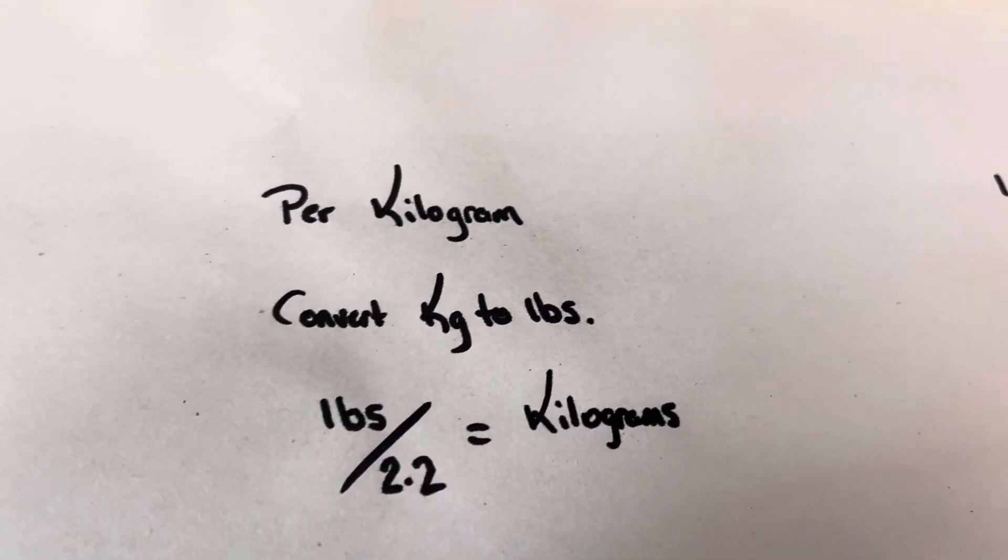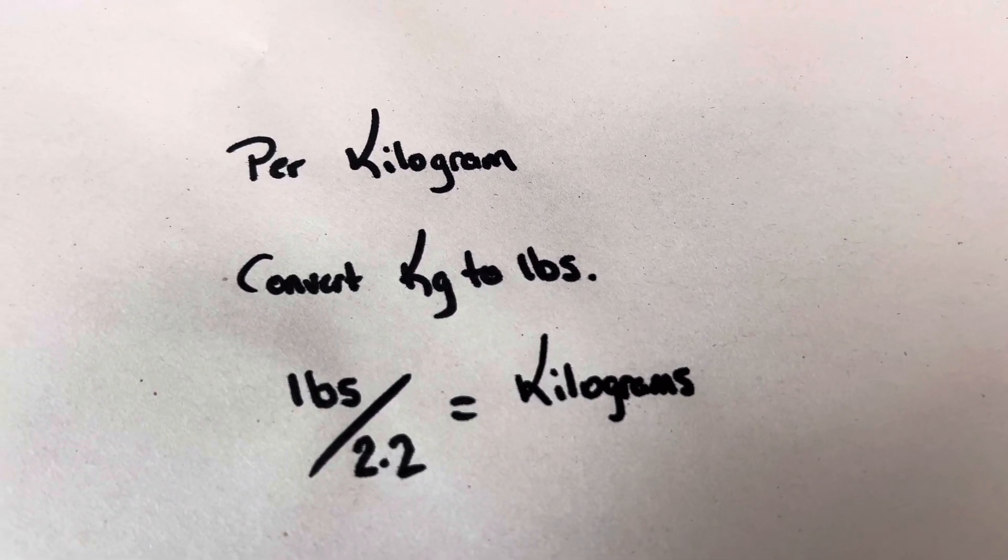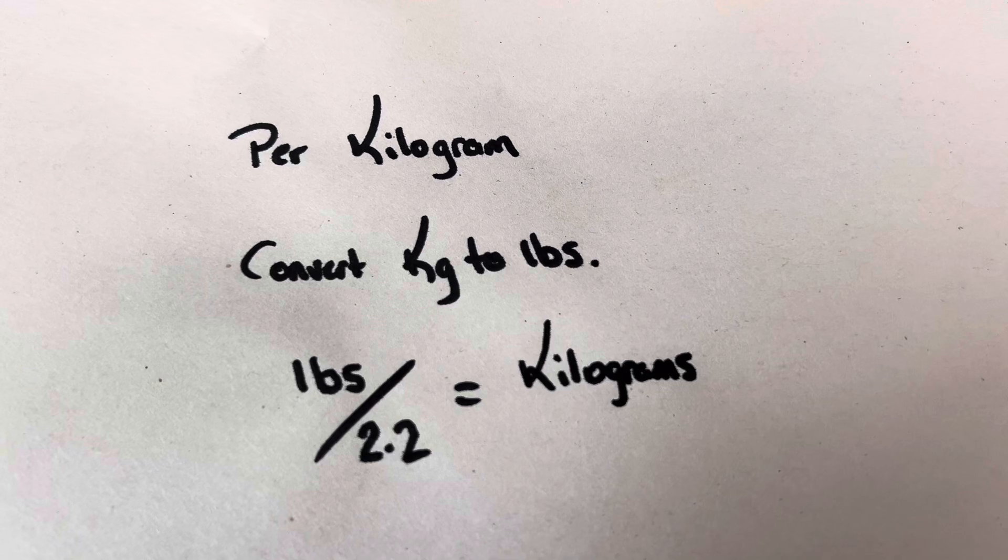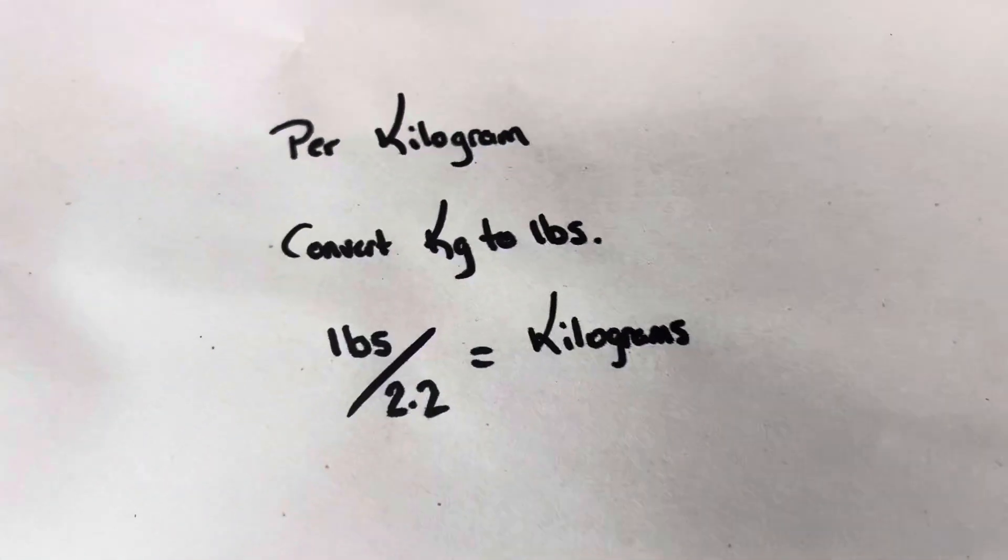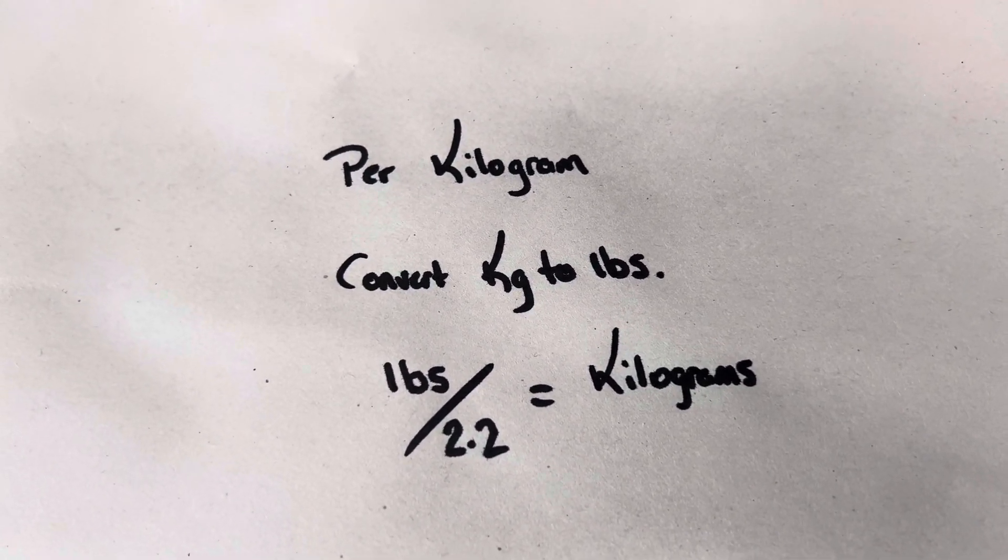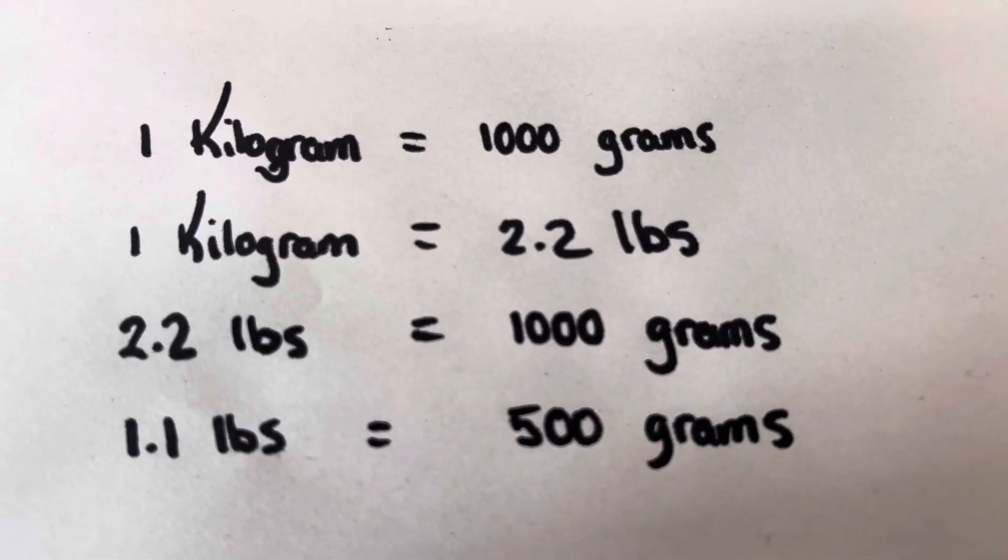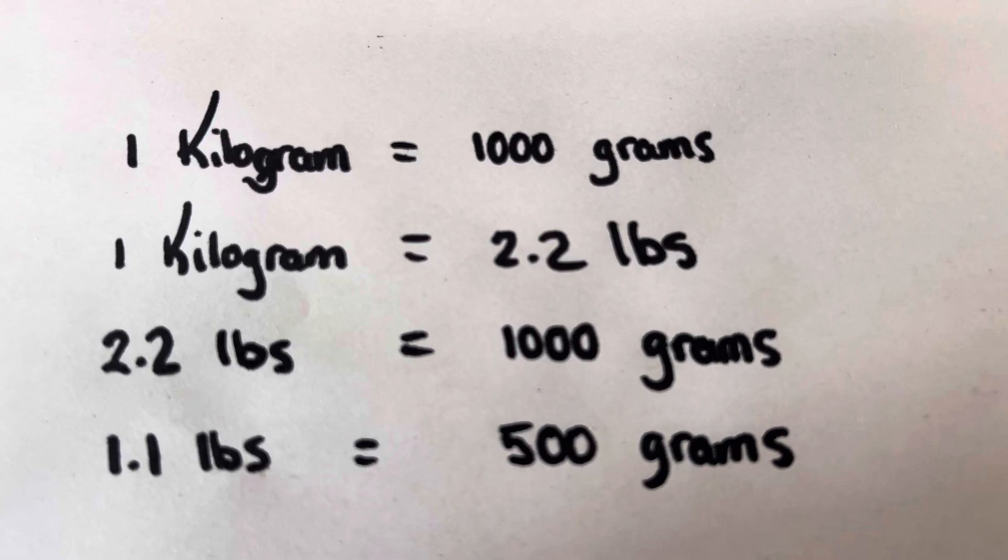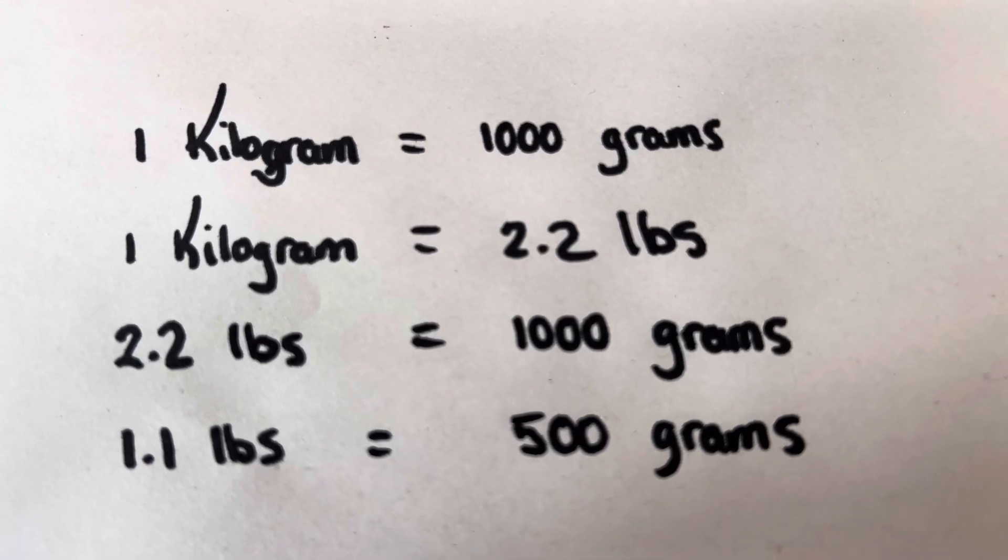A couple of the problems right off the bat for reptile doses are in kilograms. One pound divided by 2.2 will convert a pound weight to a kilogram weight. And let's make sure we know this: one kilogram equals 1000 grams. So essentially one kilogram equals 2.2 pounds, 2.2 pounds equals 1000 grams. So roughly about 1.1 pounds equals 500 grams.